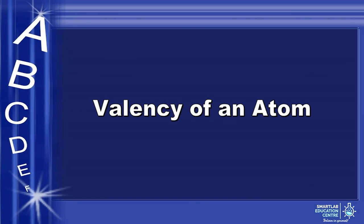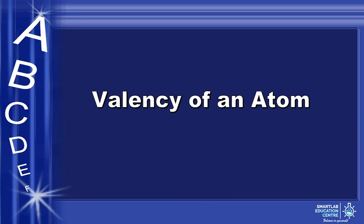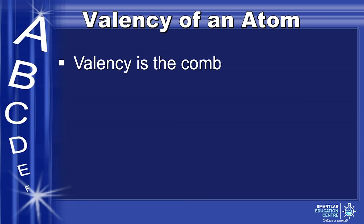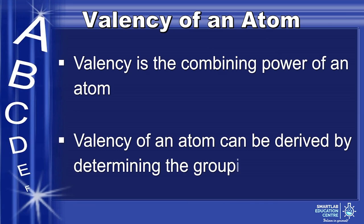First, we need to learn about the valency of an atom. What is valency of an atom? Valency is the combining power of an atom. Valency of an atom can be derived by determining the grouping of the atom. How to do that?